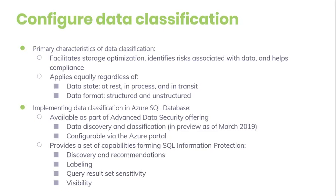The capability can be put in the server category. The first involves discovery and recommendation: the classification engine scans the database and identifies columns containing potentially sensitive data, then provides an easier way to review and apply the appropriate classification recommendations via the Azure portal. The second concerns labeling: sensitivity classification labels can be persistently tagged on columns using new classification metadata attributes introduced into the SQL Server engine.